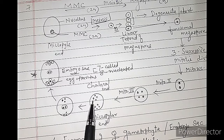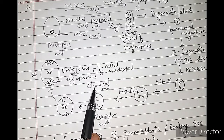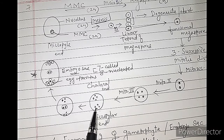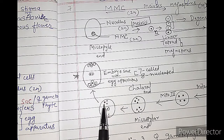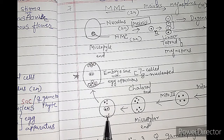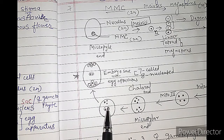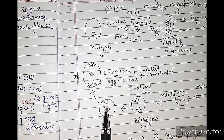In this 8-nucleated stage, 4 nuclei are present towards the chalazal end — that is, towards the base of the ovule — and 4 nuclei are present towards the micropylar end. Out of the 4 nuclei towards the chalazal end, one nucleus migrates towards the center, and similarly from the micropylar end one nucleus also migrates to the center. This central nucleus is called the diploid nucleus, also known as the polar body.